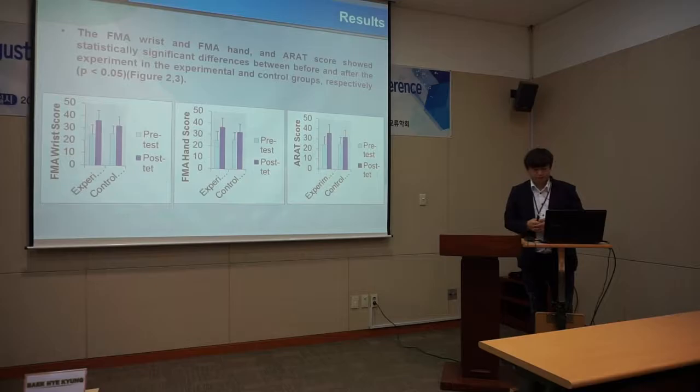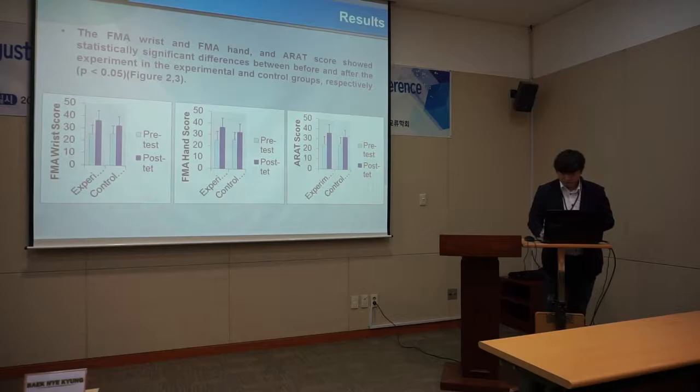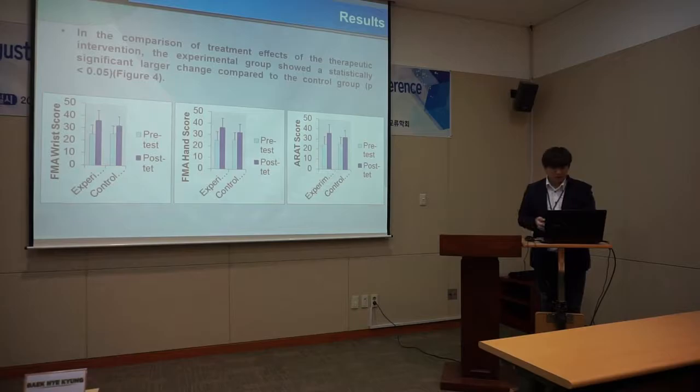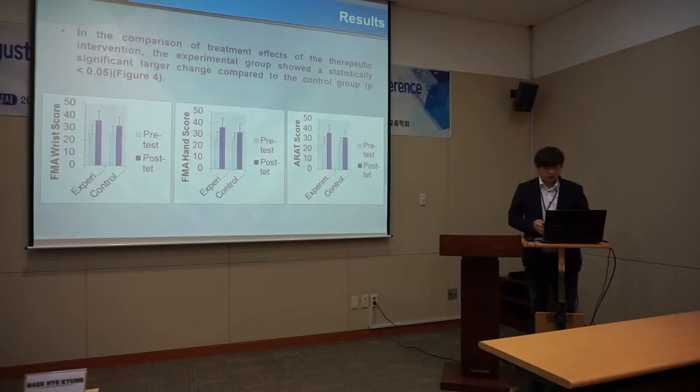The FMA wrist, FMA hand, and ARAT scores showed statistically significant differences between before and after the experiment in both the experimental and control groups respectively. In the comparison of treatment effects between the two groups, the experimental group showed statistically significant changes compared to the control group.